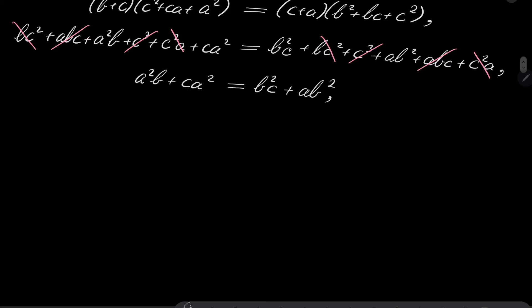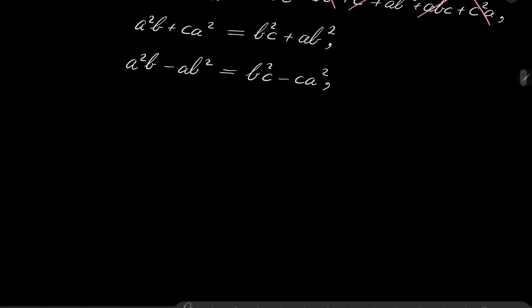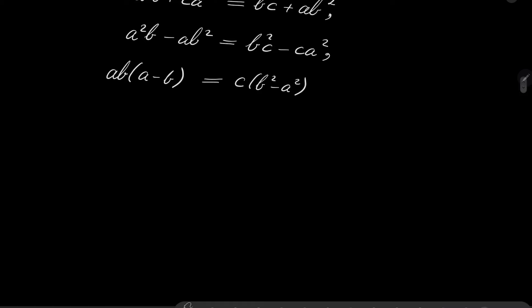And now let's write it in the following way: a²b - ab² = b²c - ca². Now on the left hand side ab can be factored out, so ab(a - b). And on the right hand side c can be factored and we have c(b² - a²).